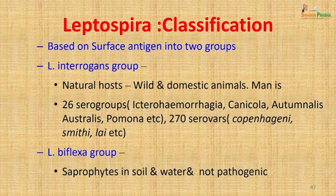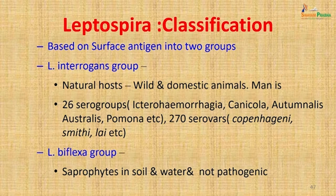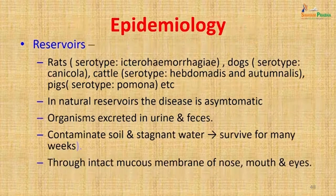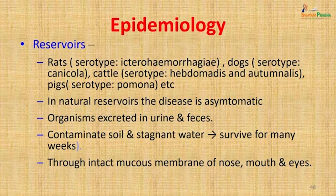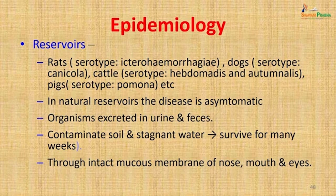There are 26 serogroup groups, each generally infecting a particular animal: L. icterohaemorrhagiae infects rodents, L. canicola infects dogs, L. hebdomadis and L. autumnalis are found in cattle, and L. pomona in pigs. Within these serogroups there are 270 serovars. Identifying the infecting serovar is important as it can indicate the animal reservoir from which infection was obtained, enabling appropriate control measures to be taken.